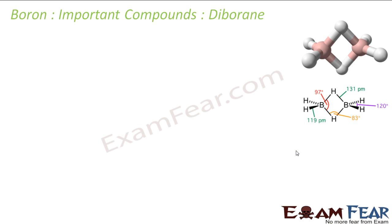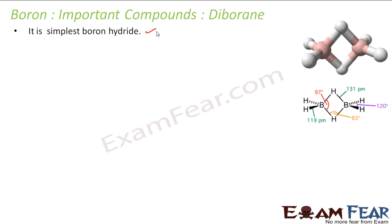Now we will talk about another compound called Diborane. Borane is nothing but the hydrides of boron. Diborane is the simplest hydride of boron — this is B2H6. It has to be BH3, but BH3 is not stable because boron is hungry for electrons, so it forms a dimer shape similar to AlCl3 and forms B2H6.